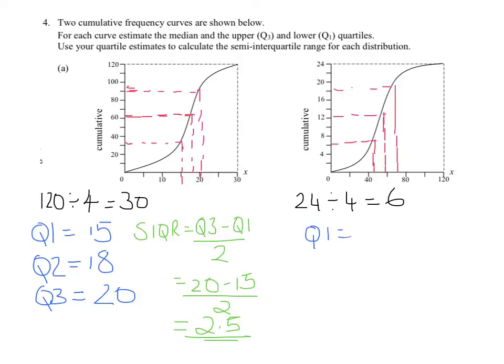Quartile 1, I can see that that's about 45, I'm going to say. Quartile 2 is about 60. Quartile 3 is about 70.